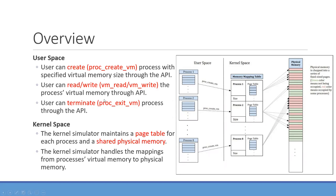The user can terminate a process through the terminate API: proc_exit_vm. These are the three APIs used in the user space to create virtual memory for the process, read/write it, and terminate the process. In the kernel space, for each process we have a page table and a struct to record the memory size. The kernel simulator maintains a page table for each process, a shared physical memory, and handles the mappings from process virtual memory to physical memory.